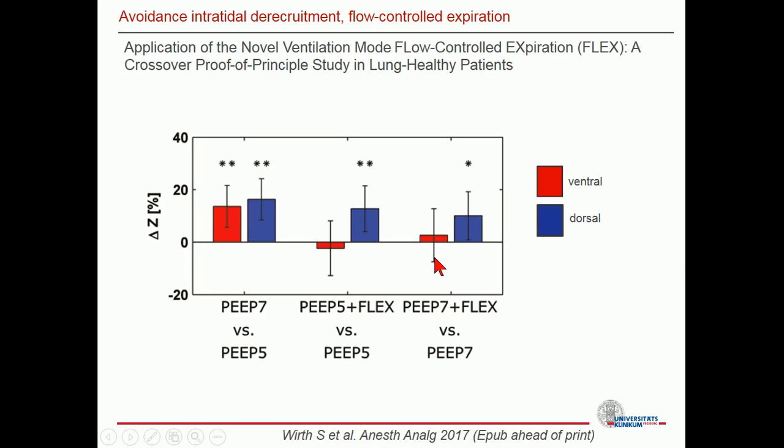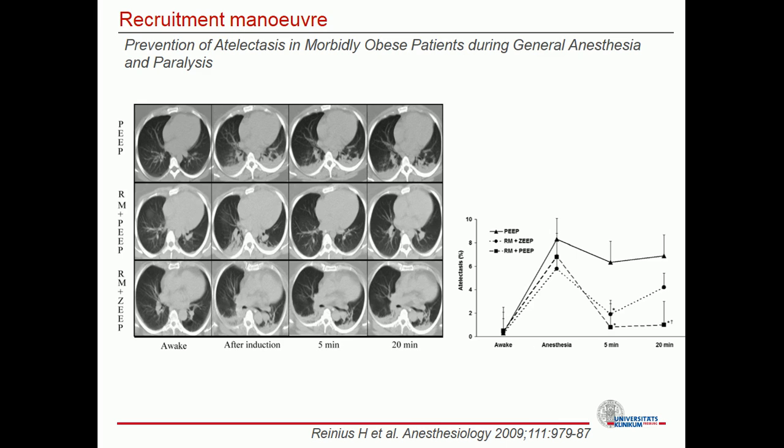We come now to the recruitment manoeuvre. An older work from a Swedish workgroup involving 30 patients with a mean BMI of 45 demonstrated that the combination of PEEP and a one-stage manoeuvre is more favorable than PEEP or a recruitment manoeuvre alone. You can see in the chest CT that macroscopically there is less atelectasis in the RM plus PEEP group, and on the right the RM plus PEEP group shows significantly less atelectasis.